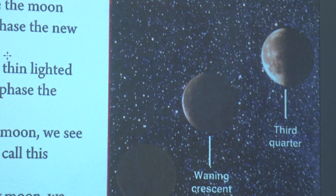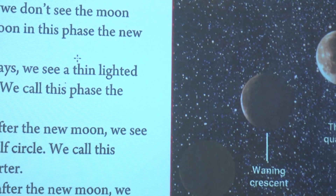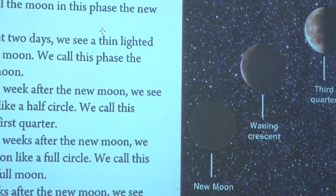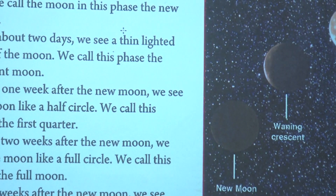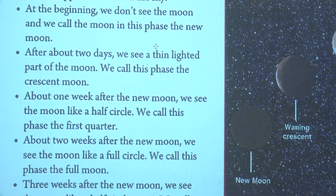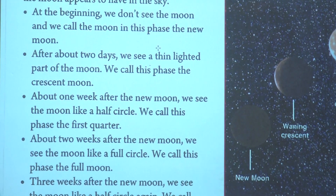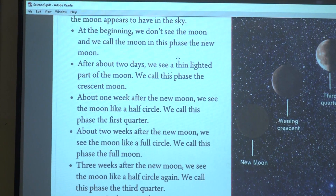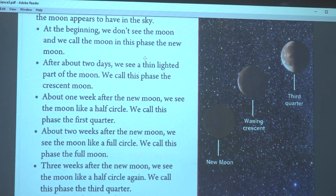After four weeks, the moon is back to its starting phase again. When the new phase starts, it means the previous phase is done. All of the phases together take about twenty-nine and a half days to complete one cycle around the earth.